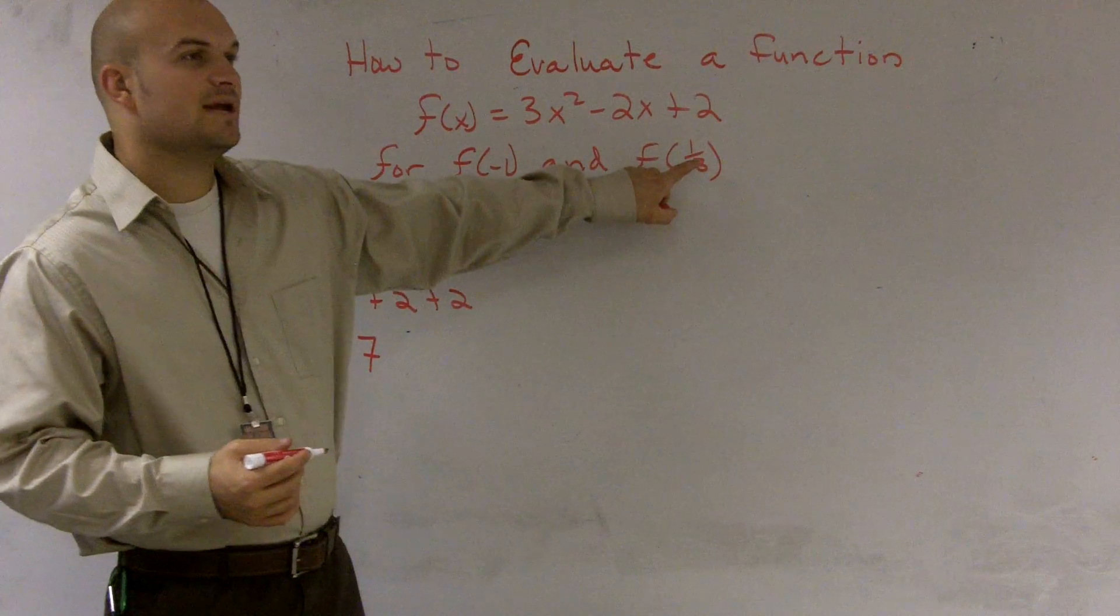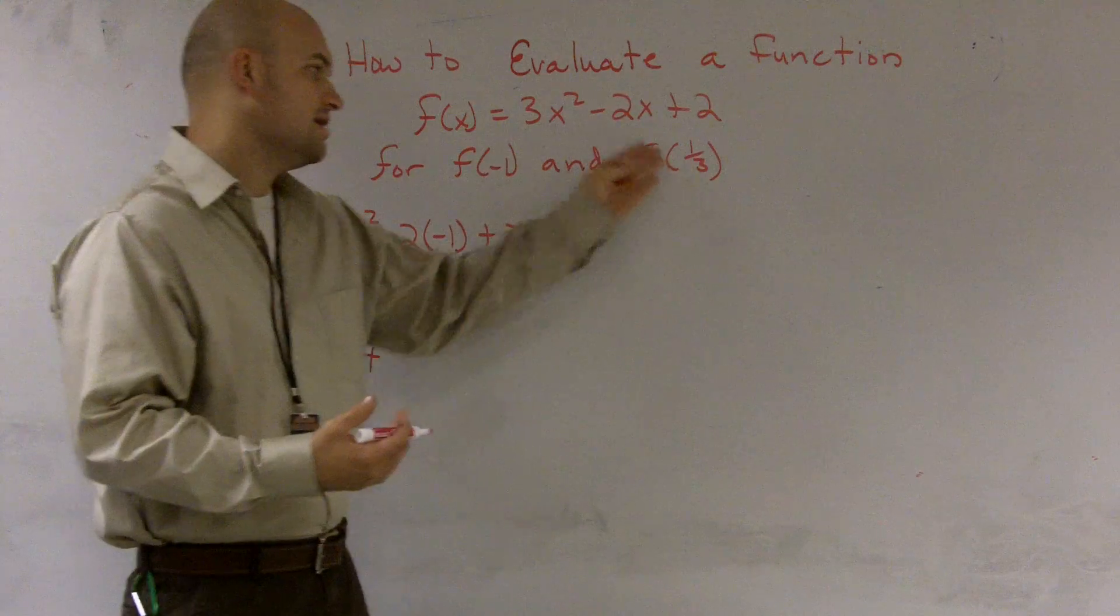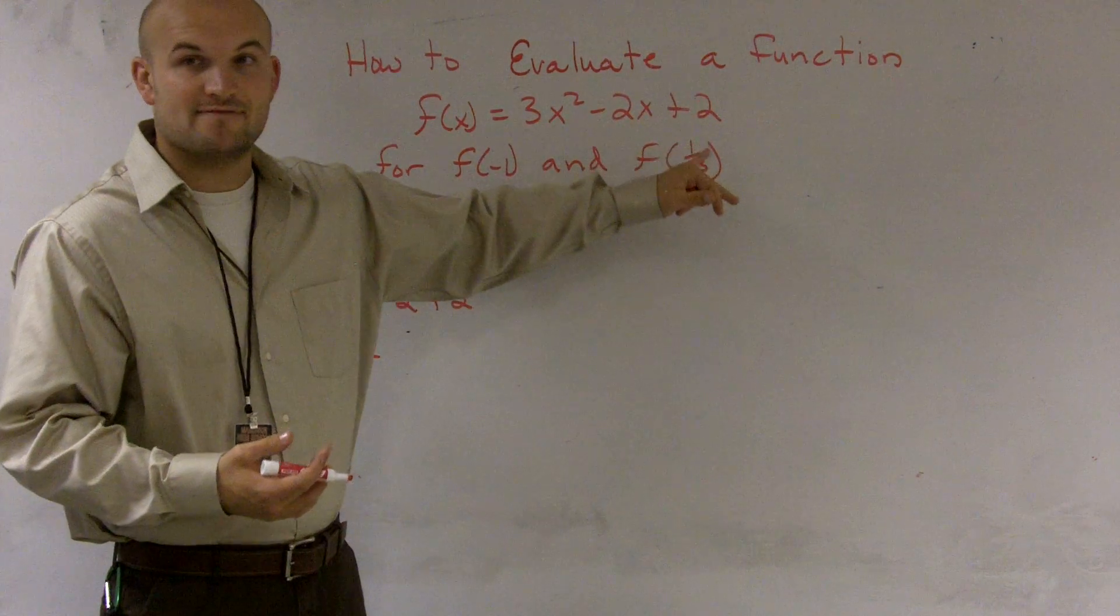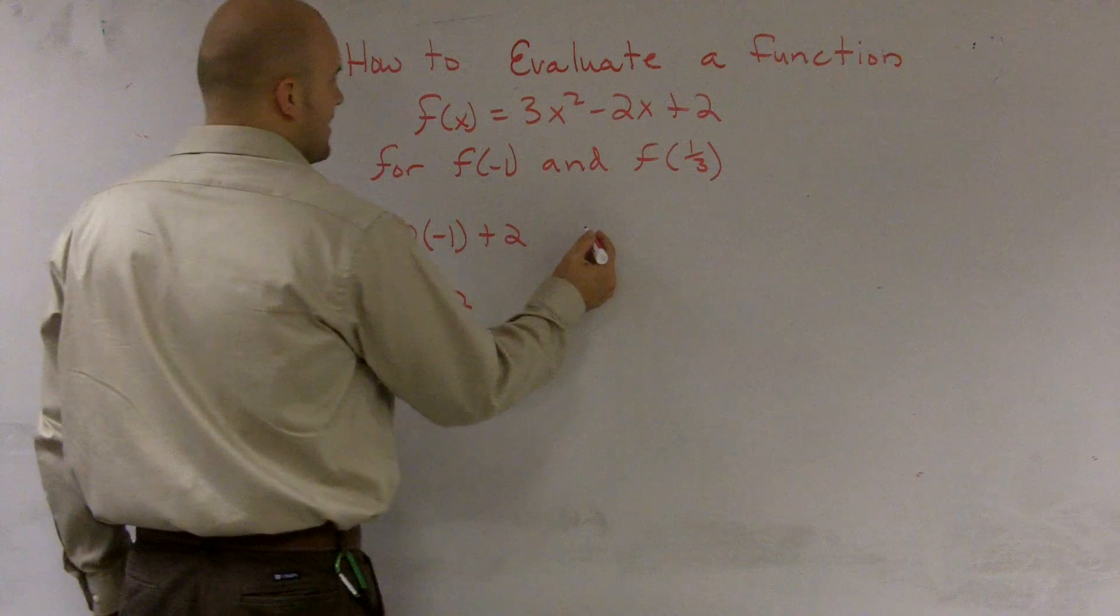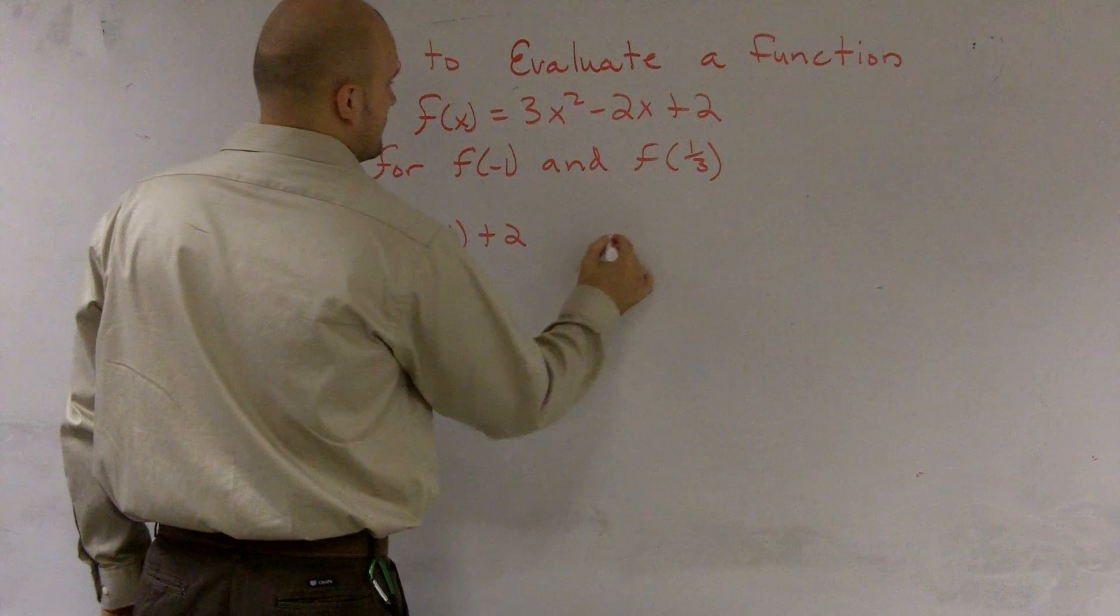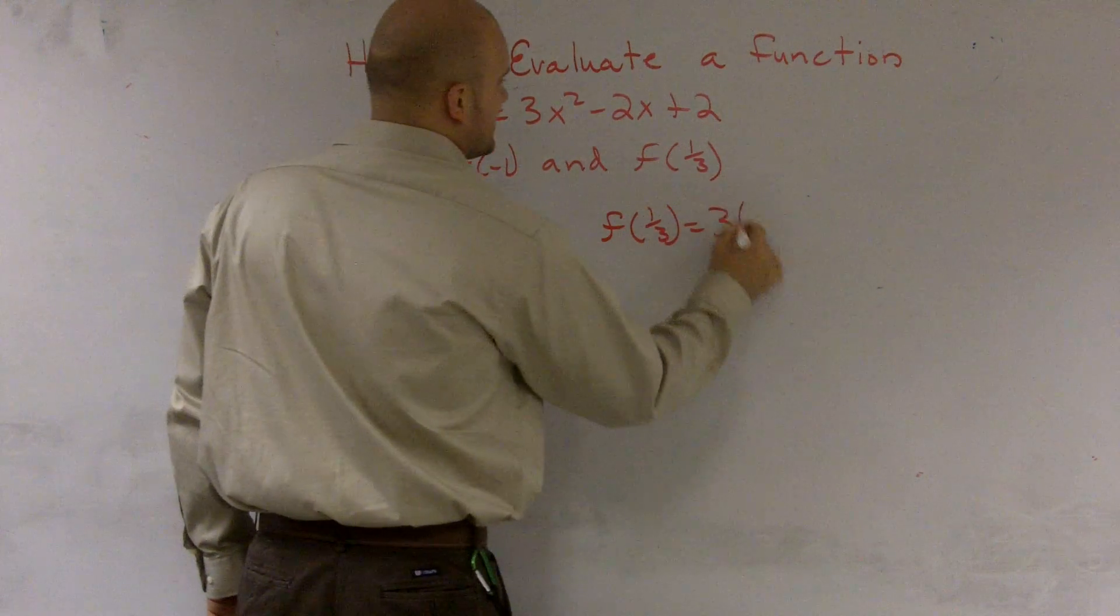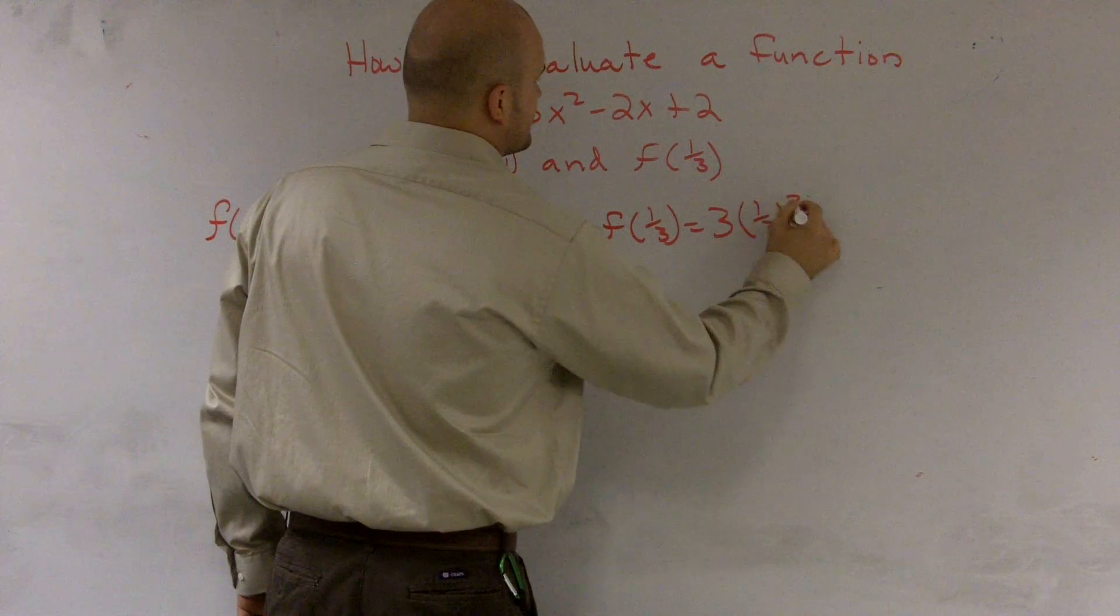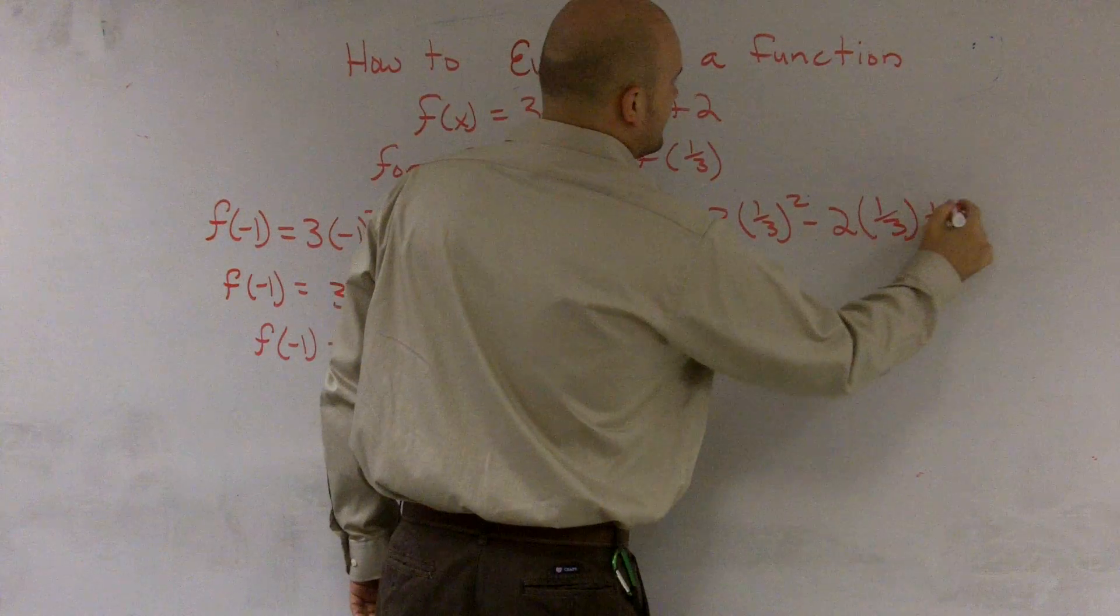Then, now let's say I want to input a different variable. Therefore, now I'm going to get a different value because it is a function. I'll get a different value. So f(1/3) is going to equal 3 times (1/3)² minus 2 times (1/3) plus 2.